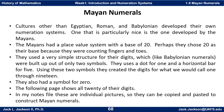They used a dot for 1 and a horizontal bar for 5. Using just these two symbols they created the digits for what we would call 1 through 19. And they also had a symbol for 0 that they used as a placeholder.